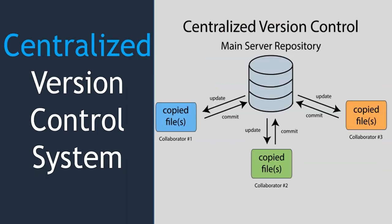In a centralized version control system, you have a centralized repository or main server repository, and collaborators and developers communicate with it to write code. There is no local copy of the code on each developer's system. If the centralized repository is not accessible, developers cannot write code — it must always be accessible. Centralized VCS solves the group collaboration problem, but if the server goes down, it's a problem for all developers.